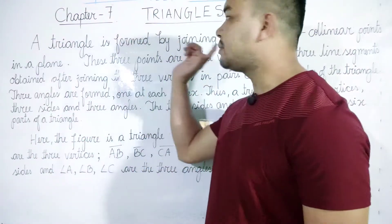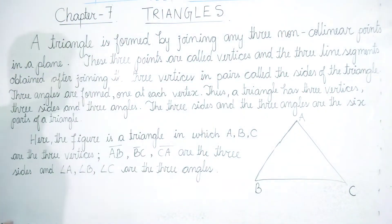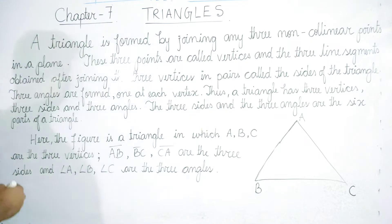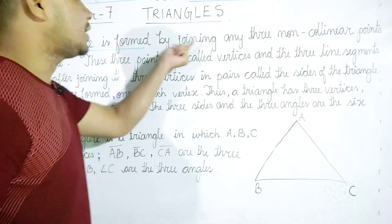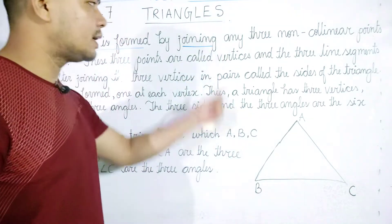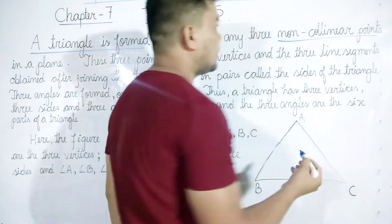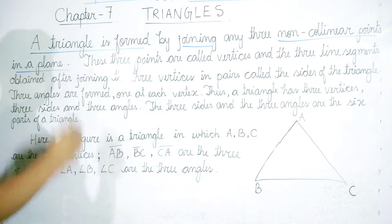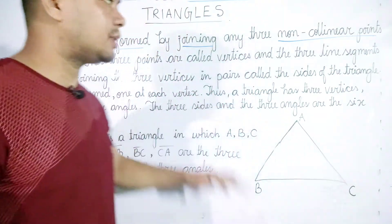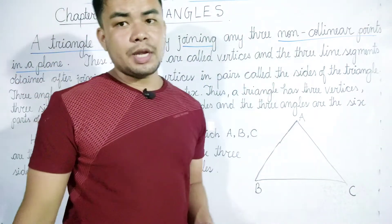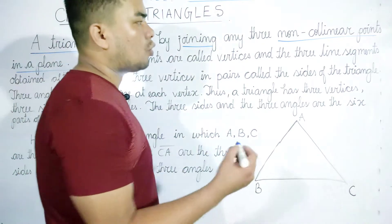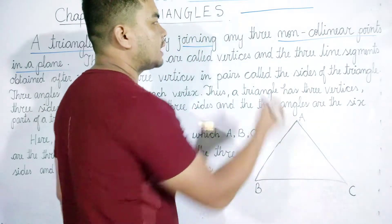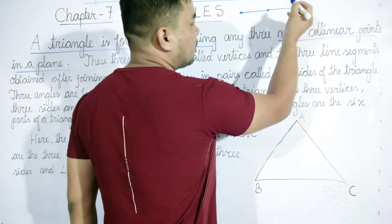Triangles. A triangle is formed by joining 3 points.